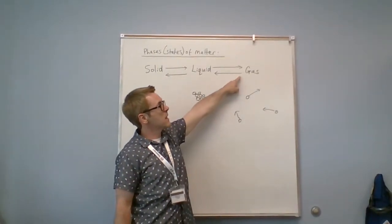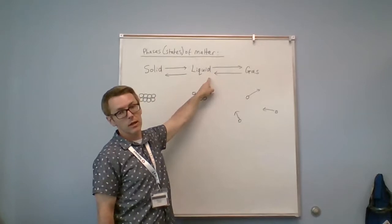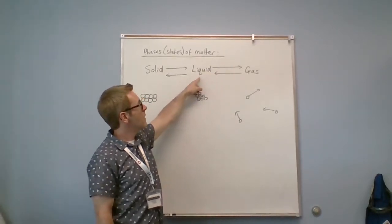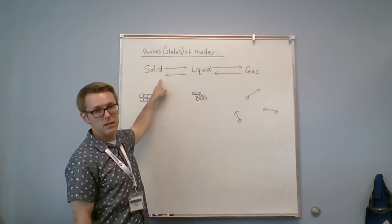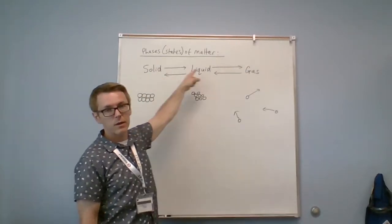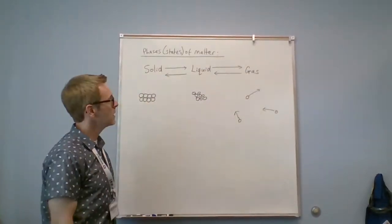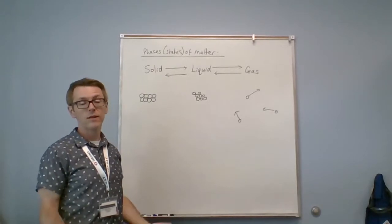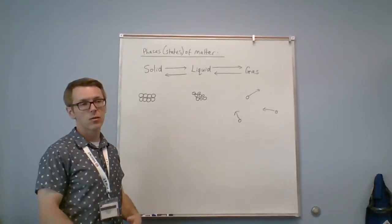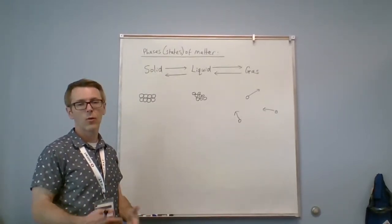You could then reverse that and condense the steam back to a liquid again. And then you could put the liquid back in a freezer and freeze it back to solid again. And then you can repeat the process. This is a reversible change because you don't permanently change anything. You can always undo what you've done.